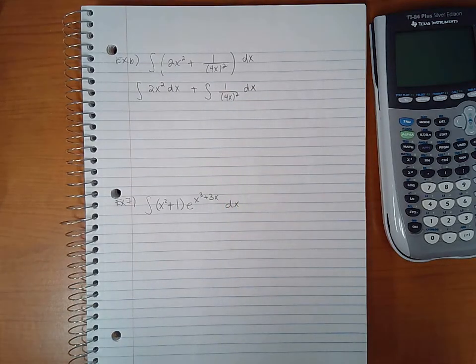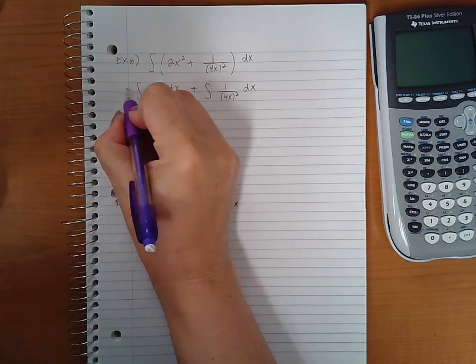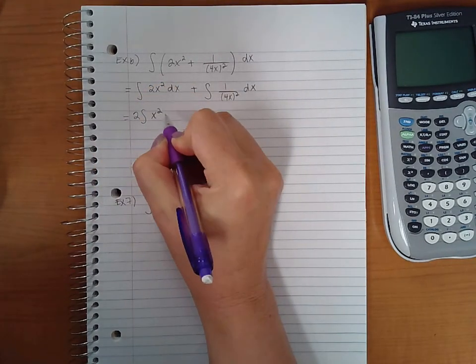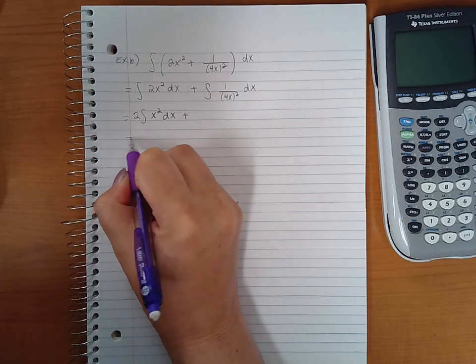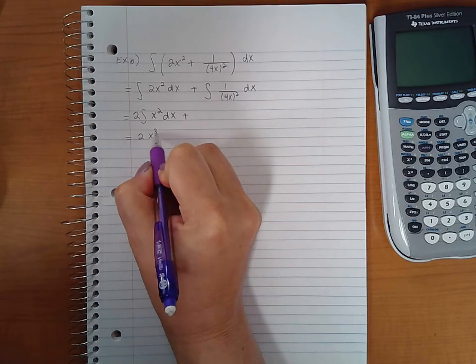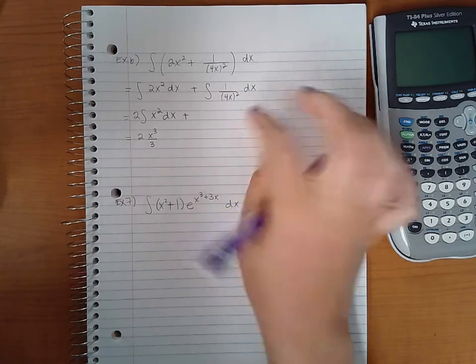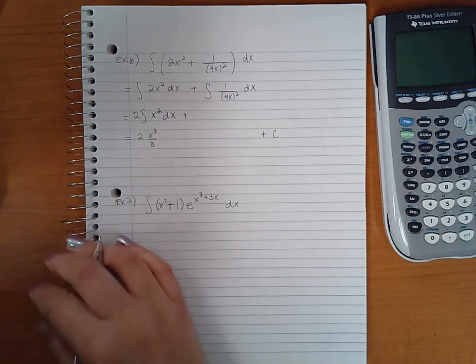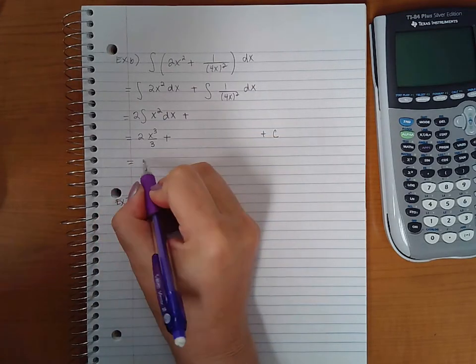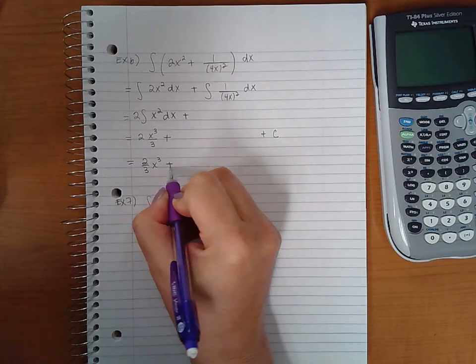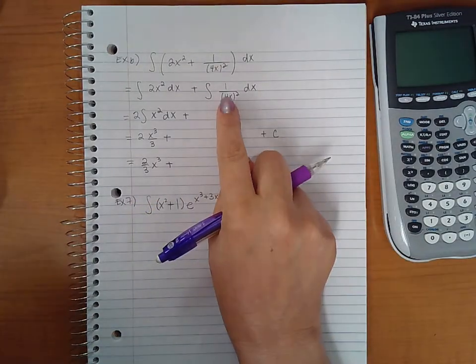Now this problem here does not require any integration by parts, so what I could do is just add one to the power, divide by the new power, and then put the plus c. But because I have a second term, I'm just going to put one big fat plus c at the end. So then I end up with here two thirds times x cubed plus something, and then plus c.